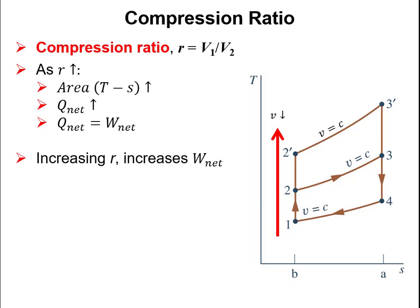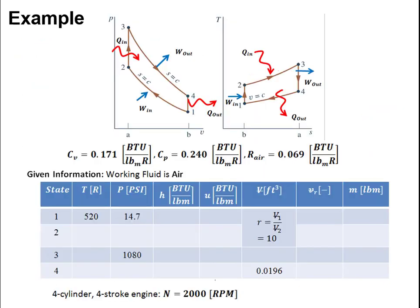One nice thing about this analytical solution is that even though it's not perfectly accurate due to our assumptions, we can learn about the real system and how to improve it. We define the compression ratio as v1 divided by v2. On a TS diagram, increasing the compression ratio makes the area inside the cycle larger, increasing net work — so a larger compression ratio means more work from the engine.